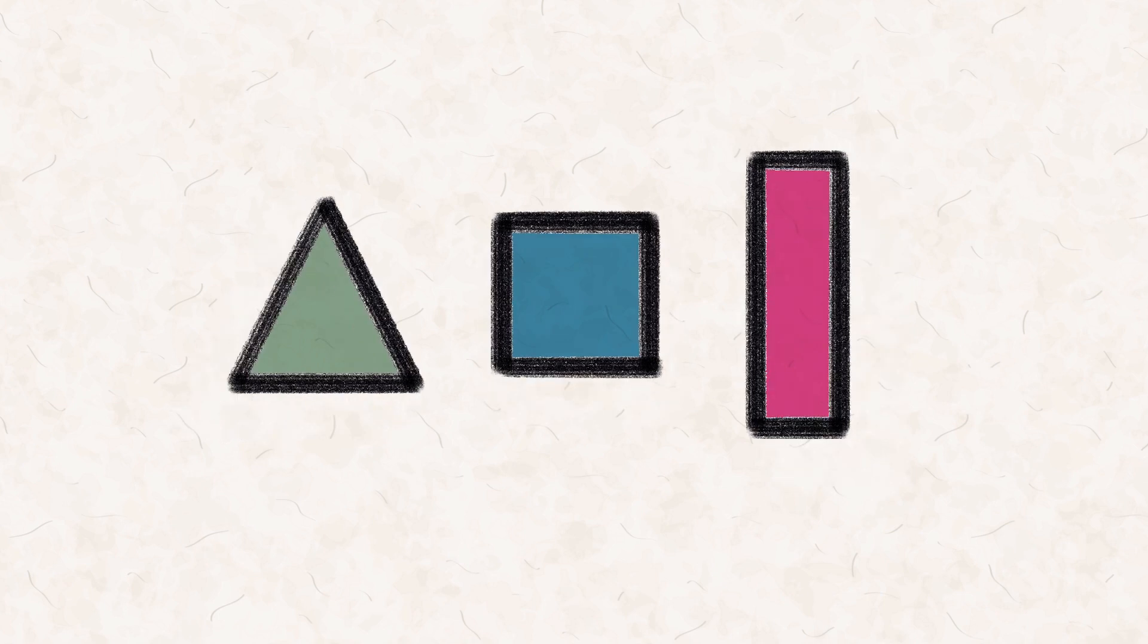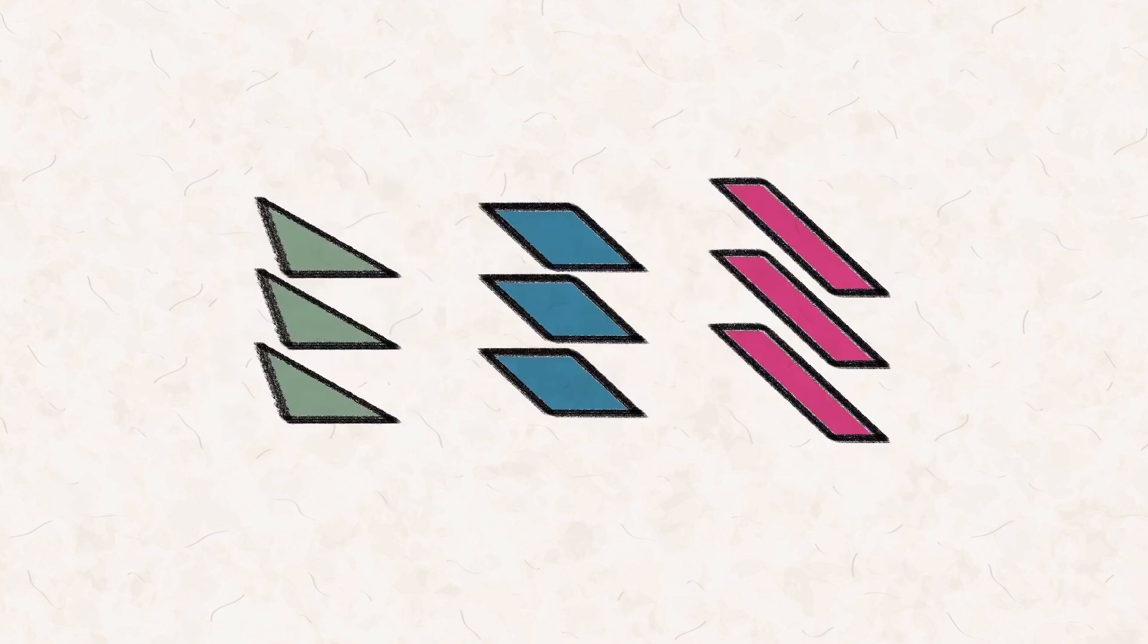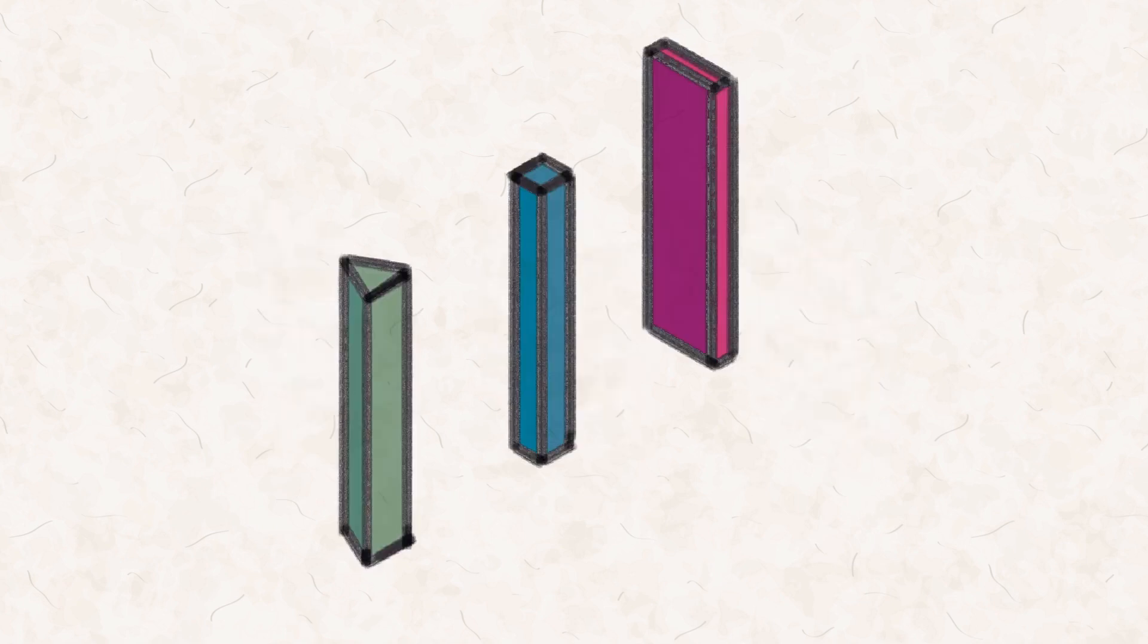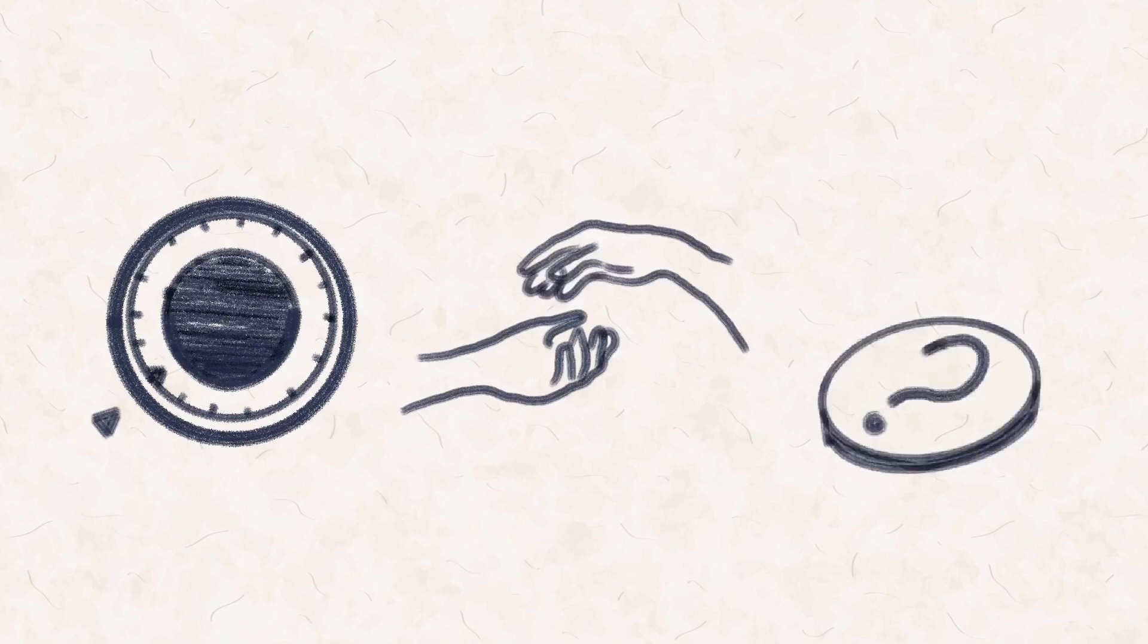Blockchain is a digital ledger that is duplicated and distributed across an entire network. Each block records transactions and is linked to the other blocks using a unique key, thus making a chain. Blockchain technology makes transactions secure, peer-to-peer driven and anonymous.